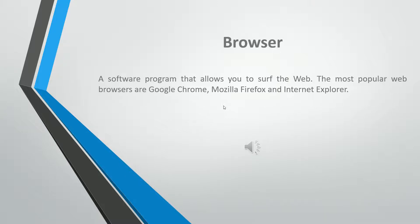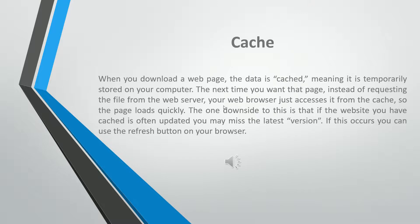A browser is a software program that allows you to surf the web. The most popular web browsers are Google Chrome, Mozilla Firefox, and Internet Explorer. When you download a web page, the data is cached, meaning it is temporarily stored on your computer. The next time you want that page, instead of requesting the file from the web server, your browser accesses it from the cache so the page loads quickly. The downside is that if the website is often updated, you may miss the latest version. If this occurs, you can use the refresh button on your browser.